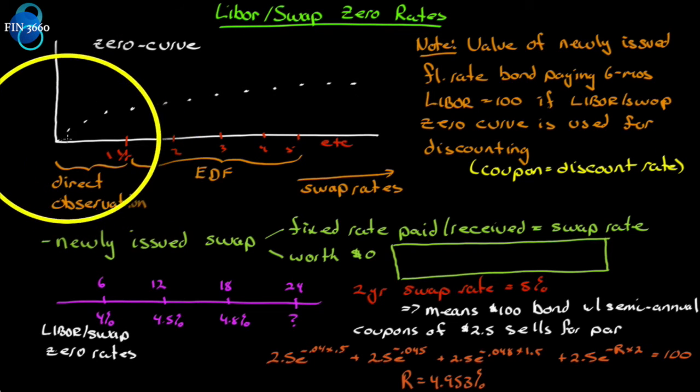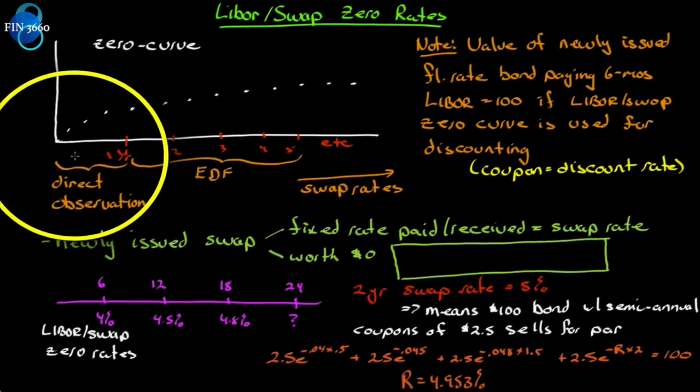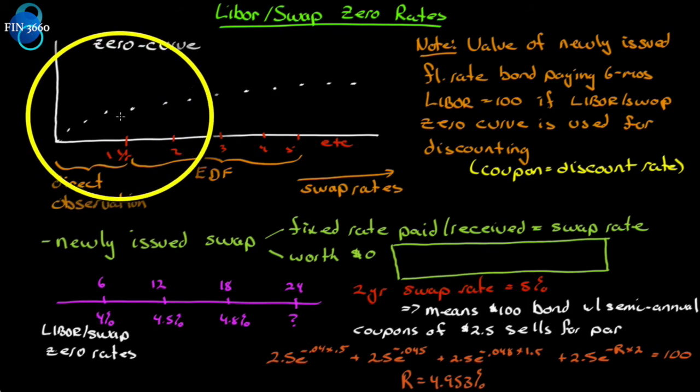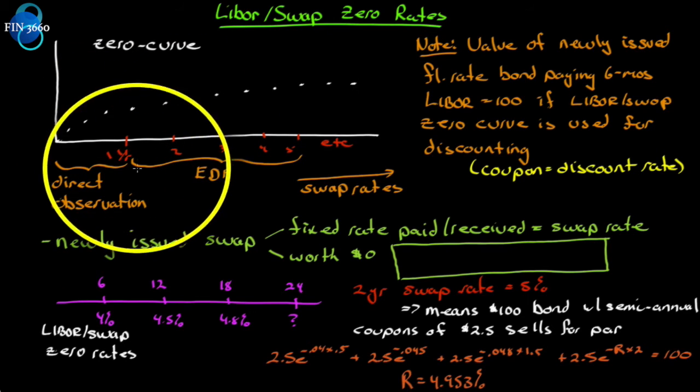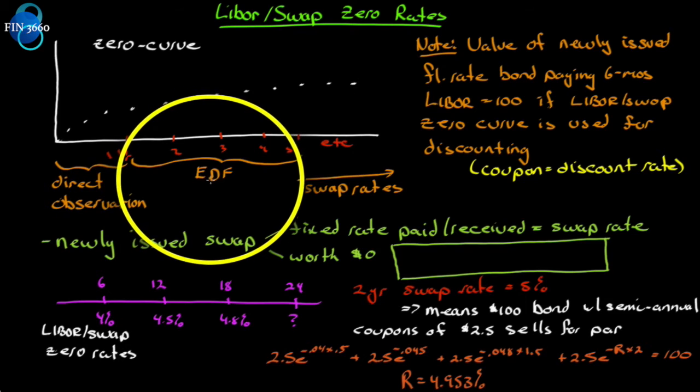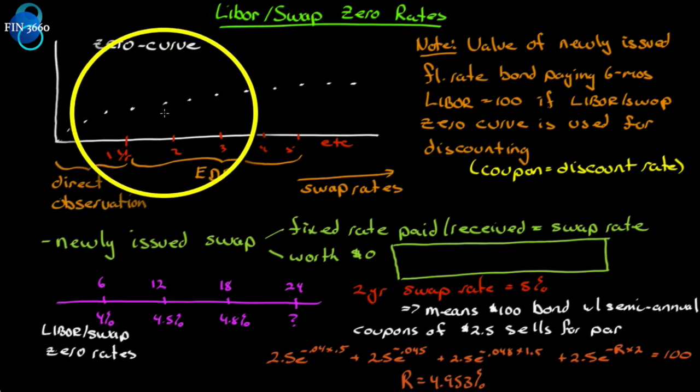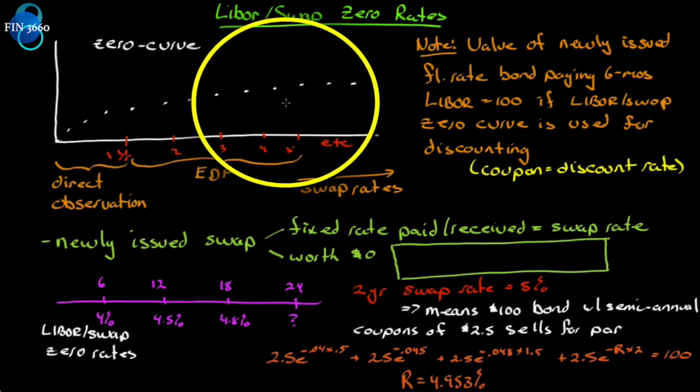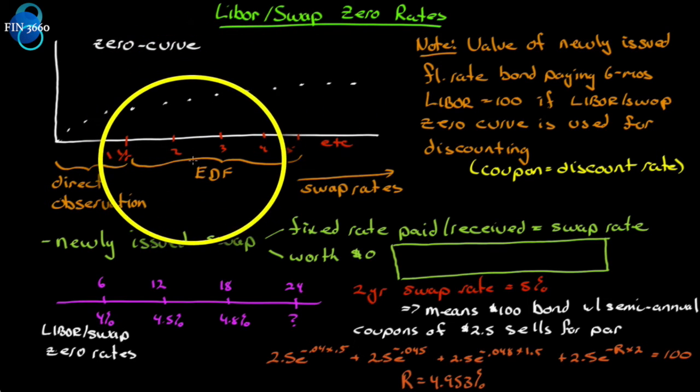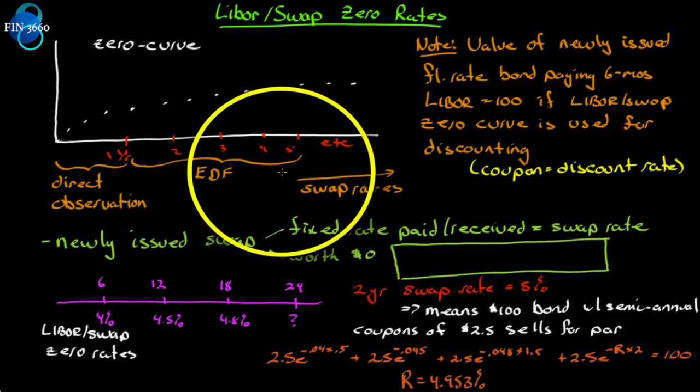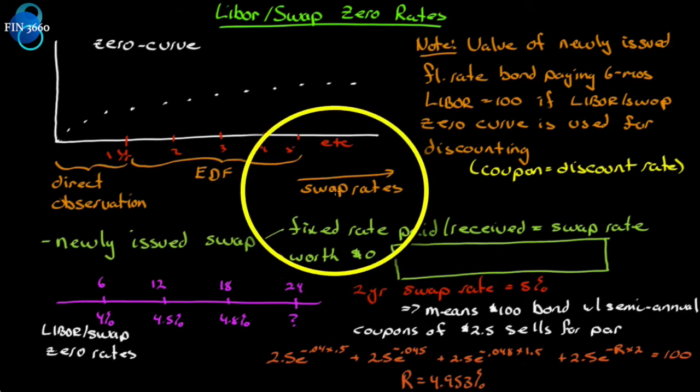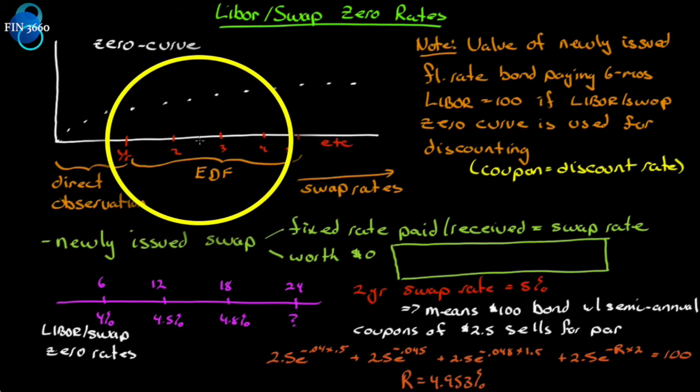For the first year, on the graph that I have here, we can observe what the zero rates are on LIBOR for three, six, nine, and twelve months by direct observation. We can see them in the marketplace. We can use eurodollar futures to extend the zero curve up to two years, maybe even up to five years. But for the longer end of the curve, we can use swap rates to extend the zero curve.